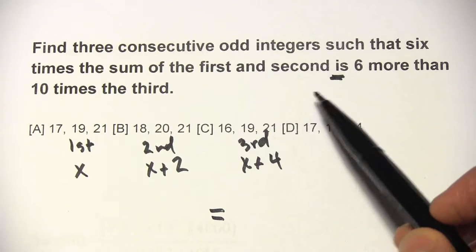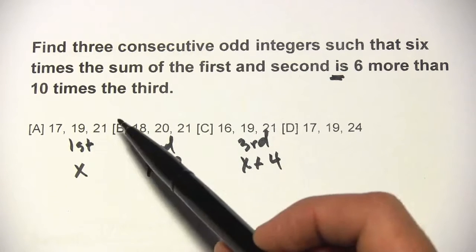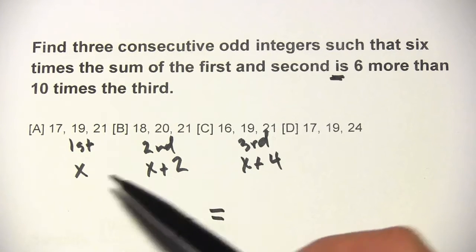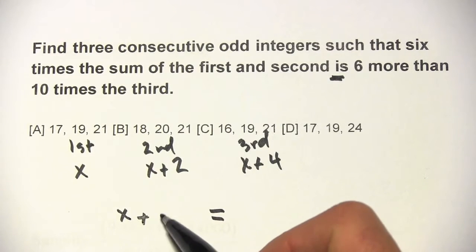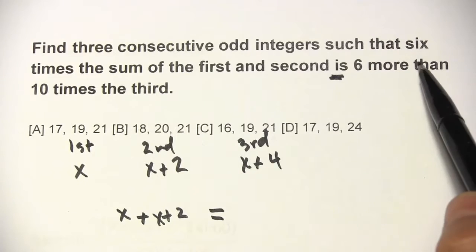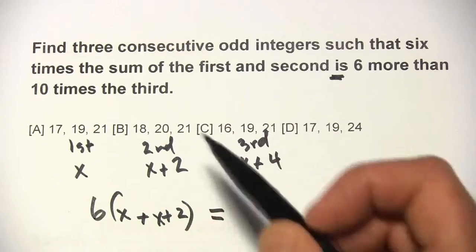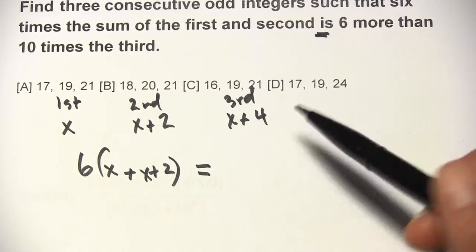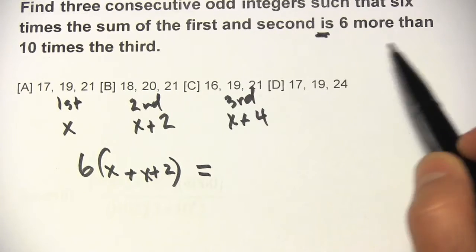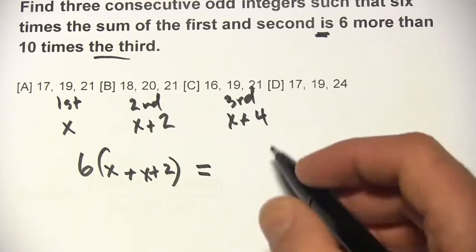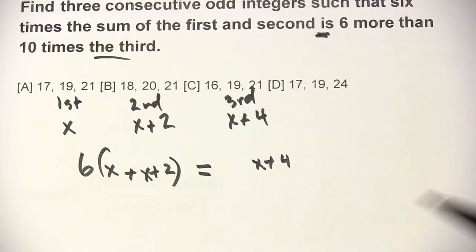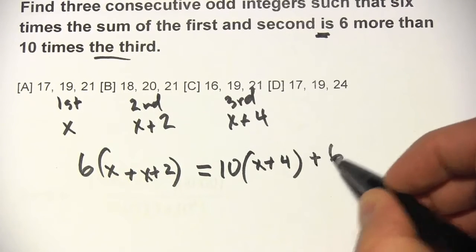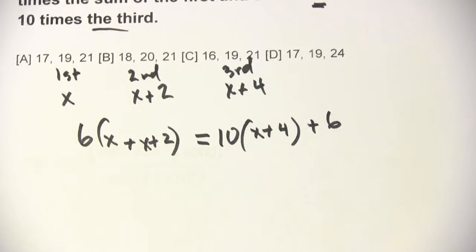Let's look at the left of the equal sign first. It says 6 times the sum of the first and the second. The sum of the first and the second is x plus x plus 2, and then 6 times that whole quantity. Now let's figure out what's on the right of the equal sign. That is 6 more than 10 times the third — the third is x plus 4, so 10 times the third is 10 times x plus 4, and 6 more than that is just plus 6.